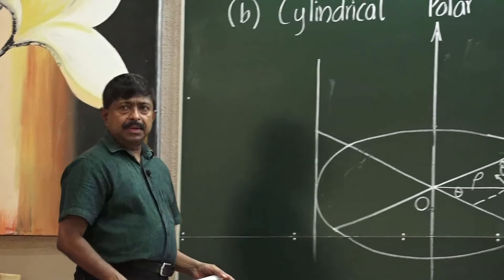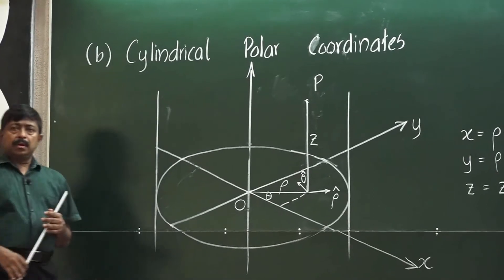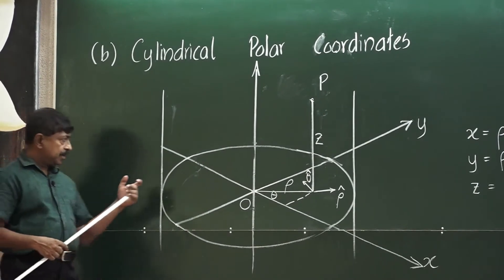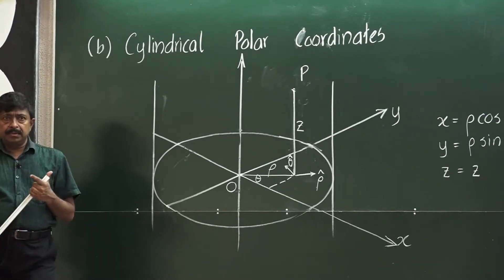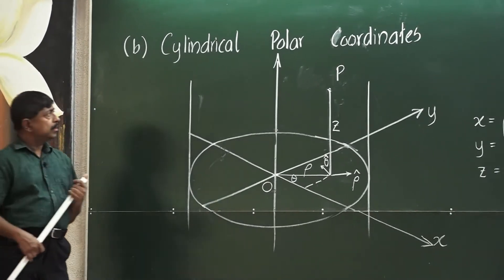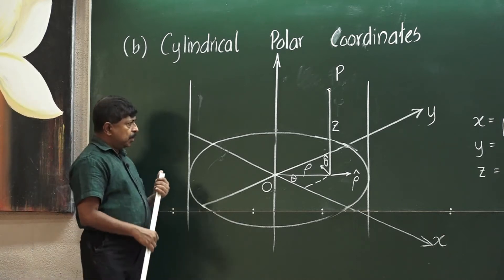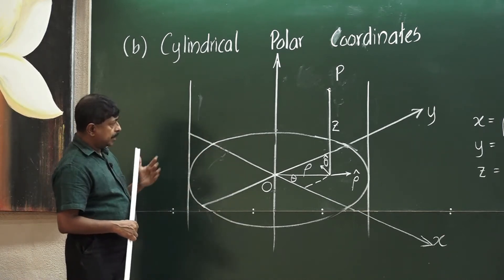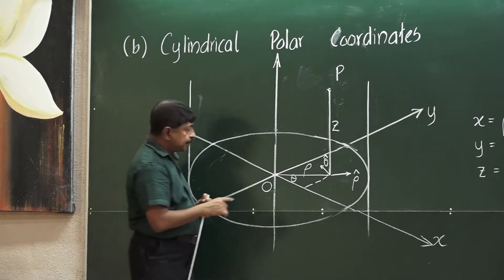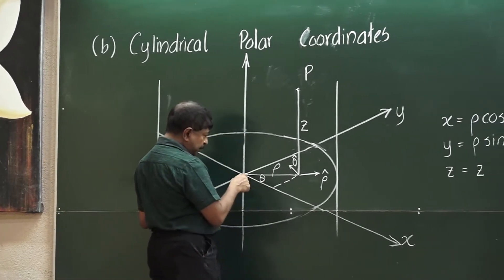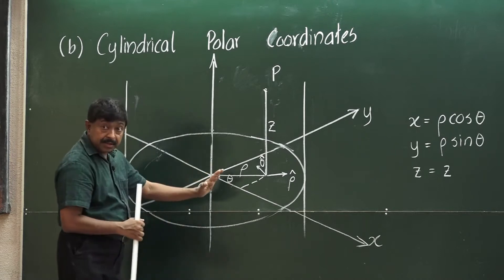Now we pay attention to cylindrical polar coordinates. This is merely an extension of polar coordinates in R2. This coordinate system is important when we are dealing with cylindrical objects. If you consider this diagram, you can locate a point in R2 on an xy plane where the distance from the origin to the point is rho and this angle is theta. It is exactly the polar coordinate system.